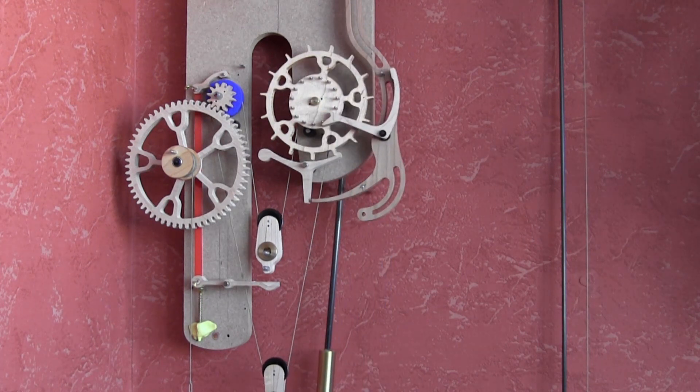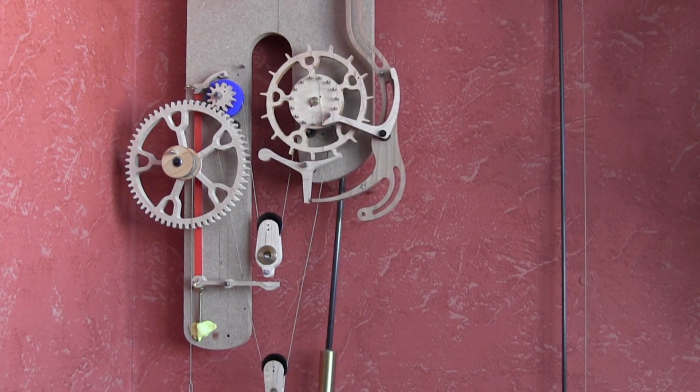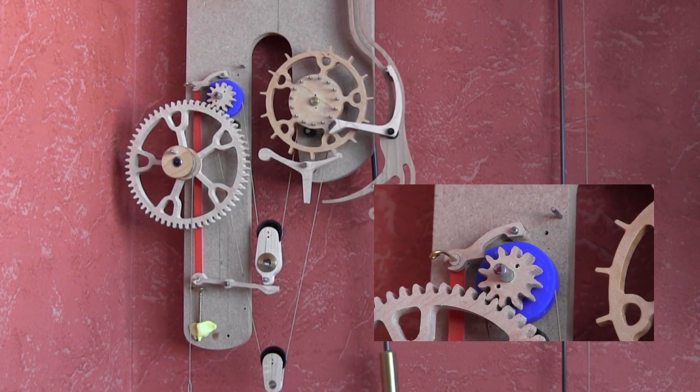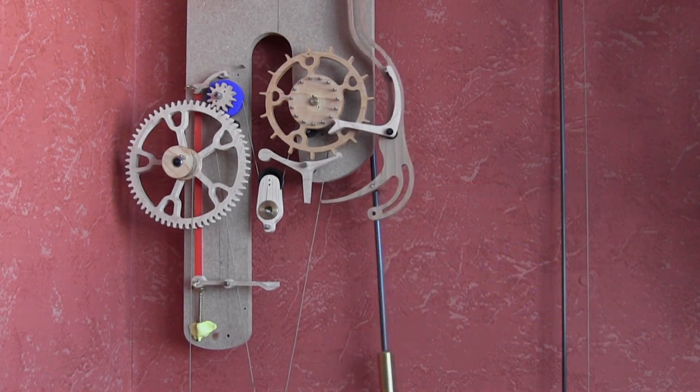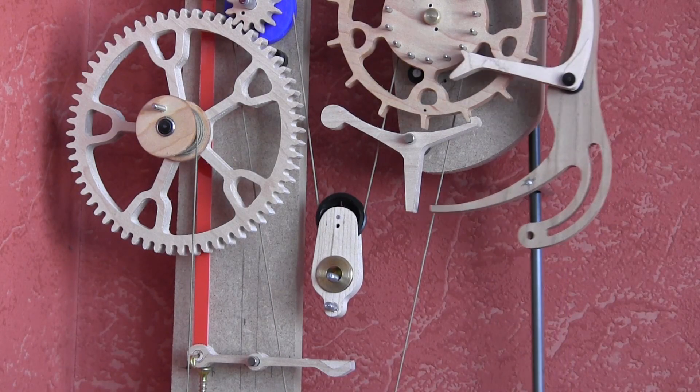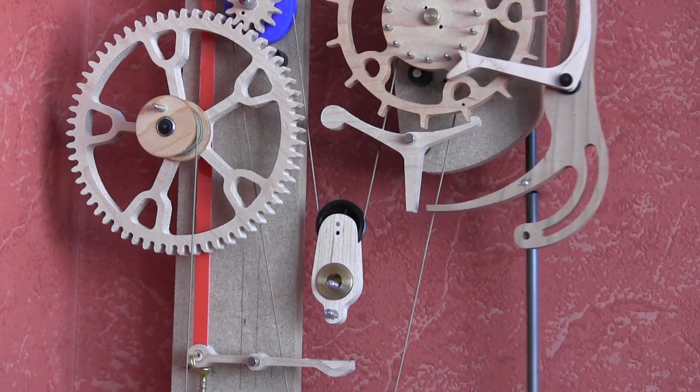The escapement weight drives the escapement until it touches the bottom link, which in turn lifts the latch holding back the gear train. Now free to move, the gear train pulls the escapement weight back up until its latch stops further movement.